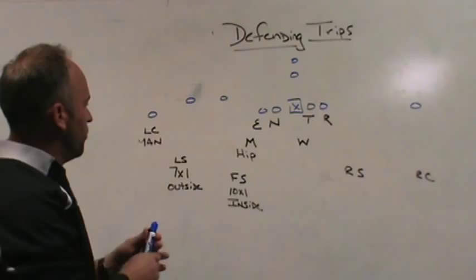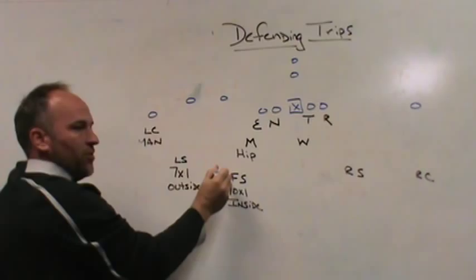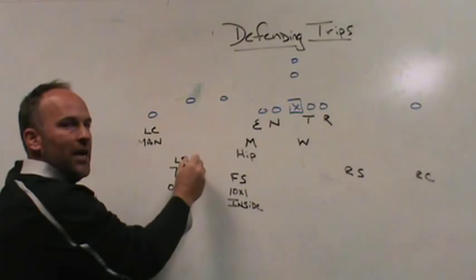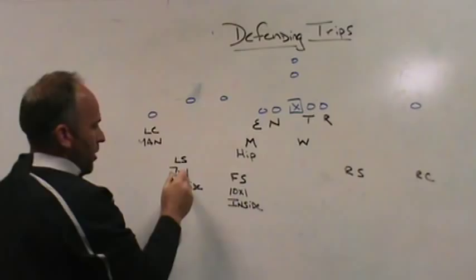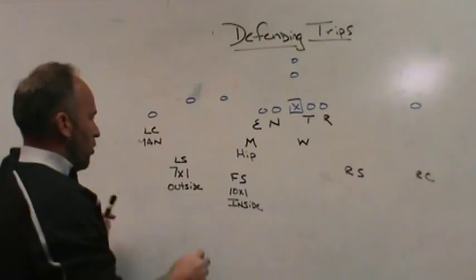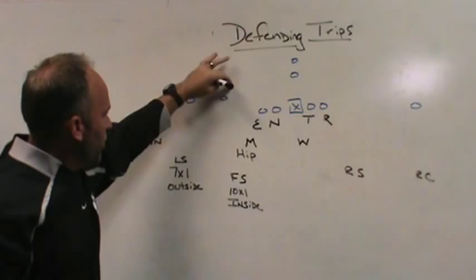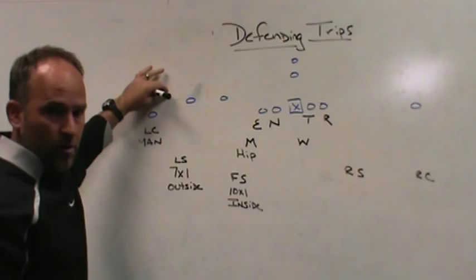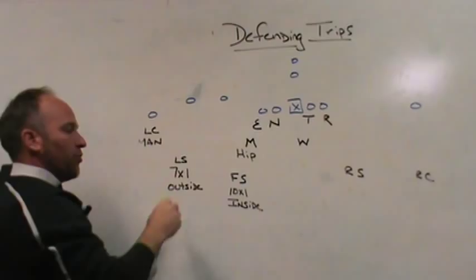Because we have an extra safety, I'm going to play 2-read — some people call it Palms or Blue — off the remaining two receivers with my two safeties. If you're a 4-3 or 3-4 team and this is a Sam linebacker, you may not be able to do this. Because we're 4-2-5 with an extra safety, I can. I'm going to be 7-by-1 outside the number two receiver with my left safety, and 10-by-1 inside the number three receiver with my free safety. That allows me to play the bubble of number three with better leverage. Because I am outside of two and reading through number three, the safety can get down on the bubble with outside leverage on the player assigned to block him, so we can turn the bubble back inside to the Mike and the free safety.